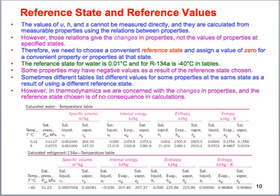What we are going to be doing, and what's important in our thermodynamics analysis, is typically the difference between two states. When we look at these values, we're looking at really the difference between two states of interest, and that is what will give us the result we're looking for when we perform our analysis. Keep in mind that these are relative values to a reference state — that's why you may see a negative internal energy pop up somewhere on these charts.